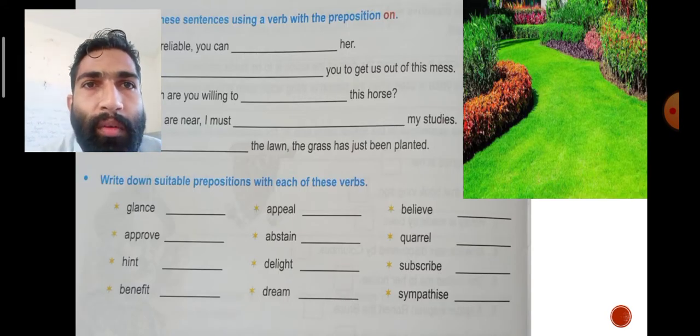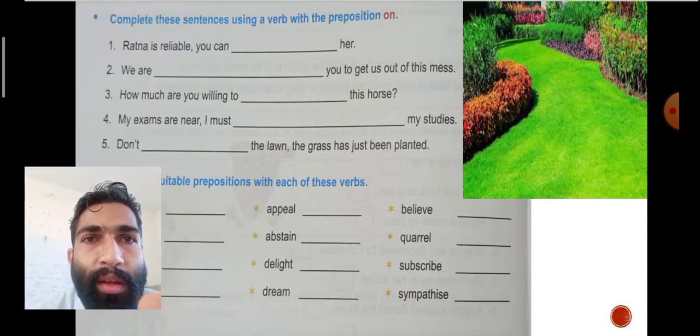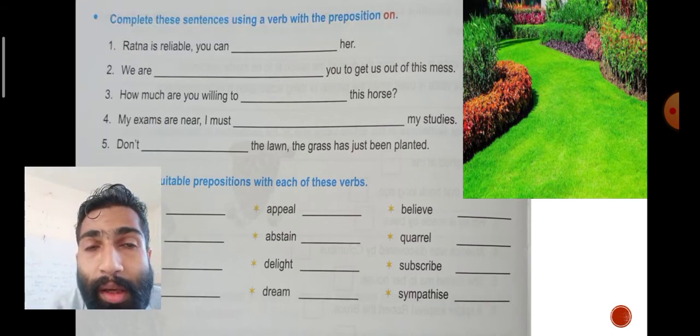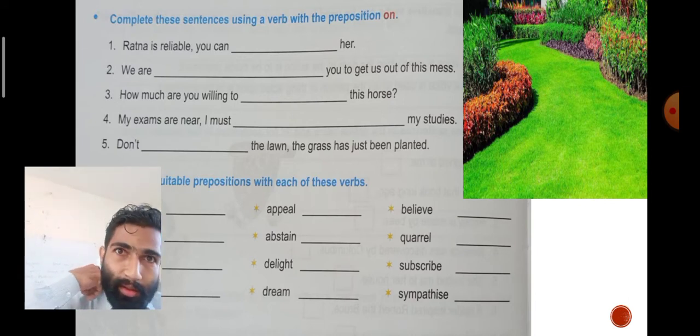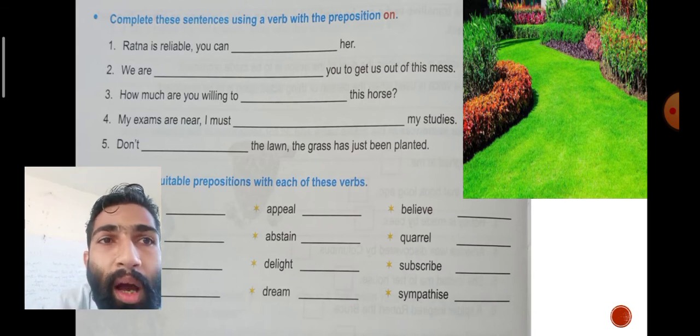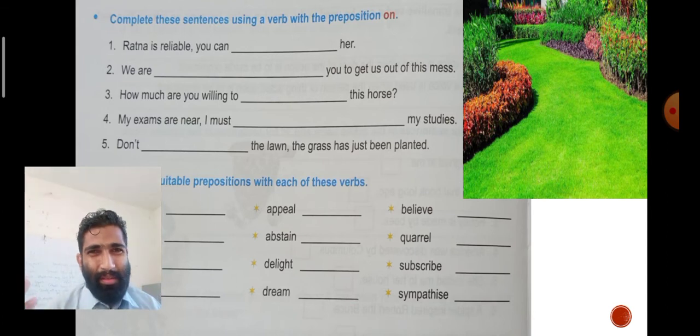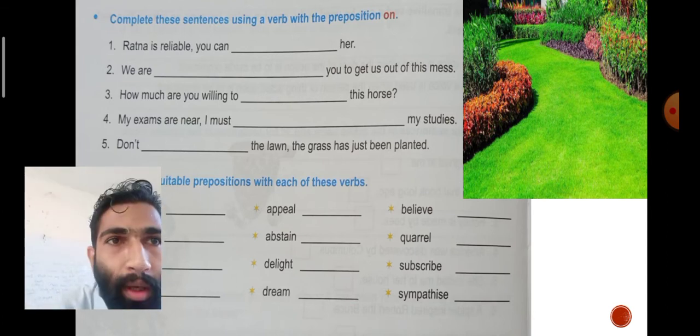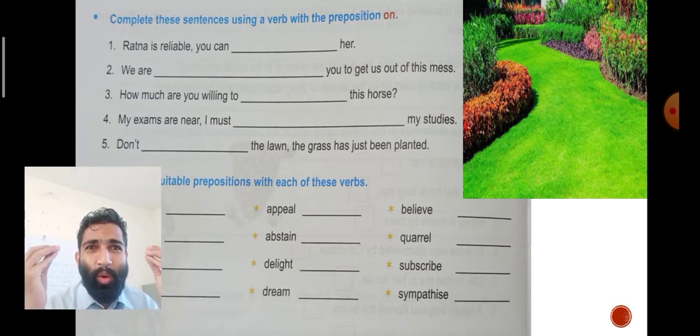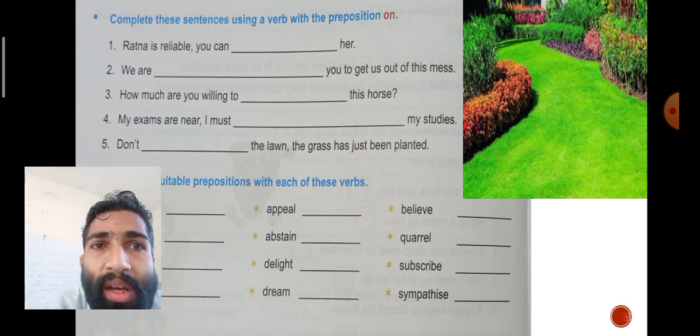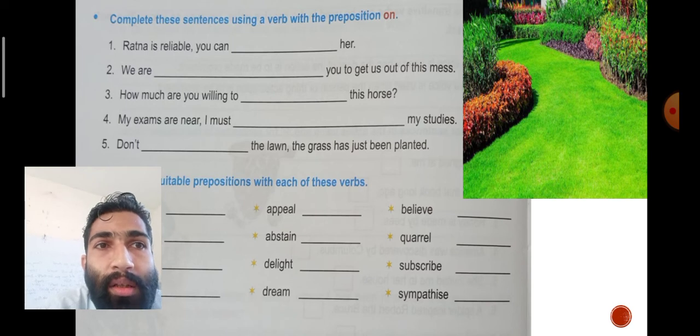We were here. 'Retina is reliable'—reliable means trustworthy, so you can trust her. 'We are depending on you to get us out of this mess.' Mess means something which is not in order, opposite to order.